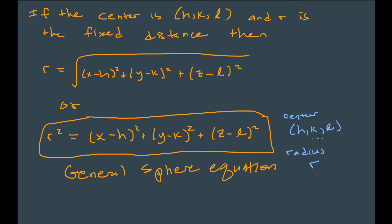The center is H, K, L and the radius is R. A common mistake is forgetting to take the square root. If you see a number like 25, 49, or 50 on the right-hand side, don't say that's the radius — the radius is the square root of that number, so the square root of 25 is 5, and the square root of 49 is 7. The right-hand side must be a perfect square.